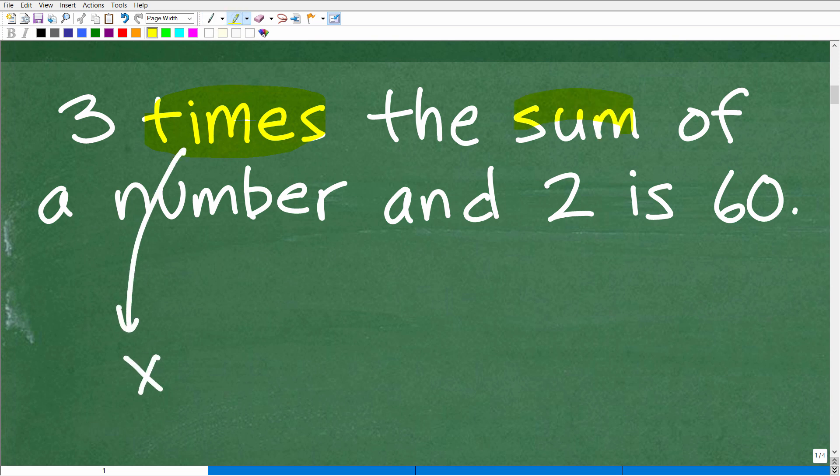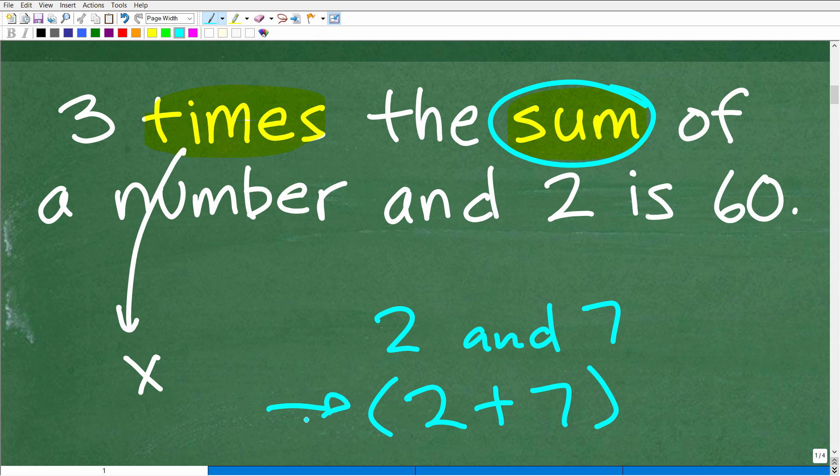Now, here we have the sum. Now we have to understand this word here. The sum - anytime you see the word sum or difference in mathematics, I'm going to tell you right now, you want to use parentheses. So if I tell you the sum of two and seven, the sum of two and seven would be two plus seven. But get in the habit of putting a sum or difference in parentheses. If you can remember this, this will save you a lot of pain because so many errors are caused when students do not use parentheses. This is a group.